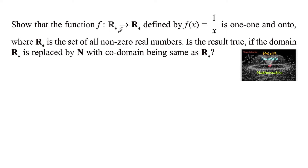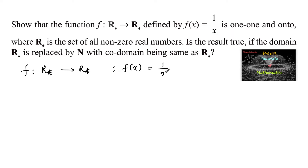Show that the function f from ℝ* to ℝ* defined by f(x) = 1/x is one-to-one and onto, where ℝ* is the set of all non-zero real numbers. Also, check if the result is true if the domain ℝ* is replaced by ℕ (natural numbers) with the codomain being the same ℝ*. Given f: ℝ* → ℝ*, f(x) = 1/x, where ℝ* = ℝ \ {0}.